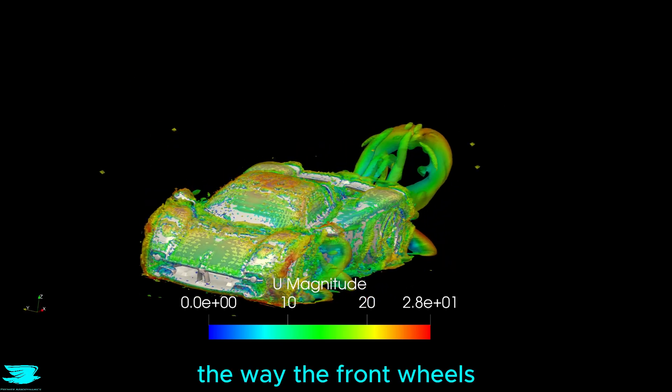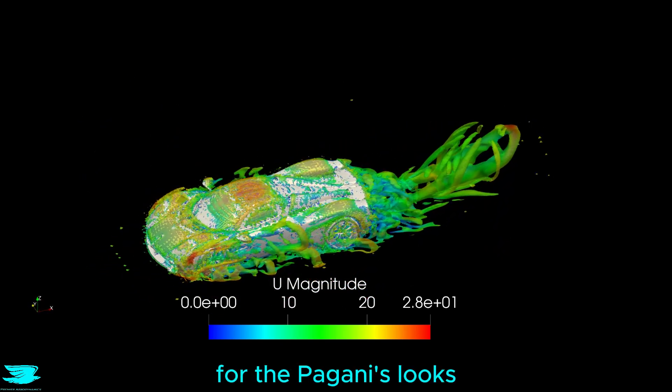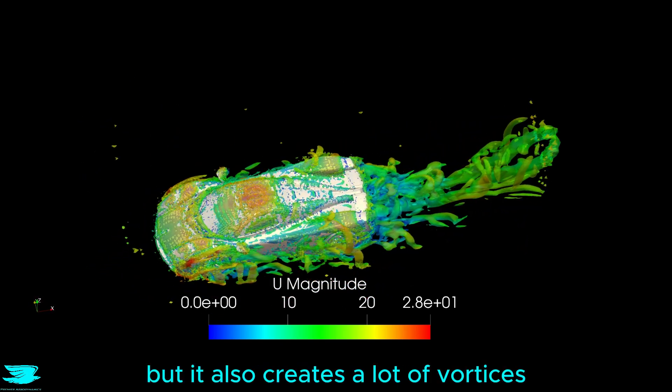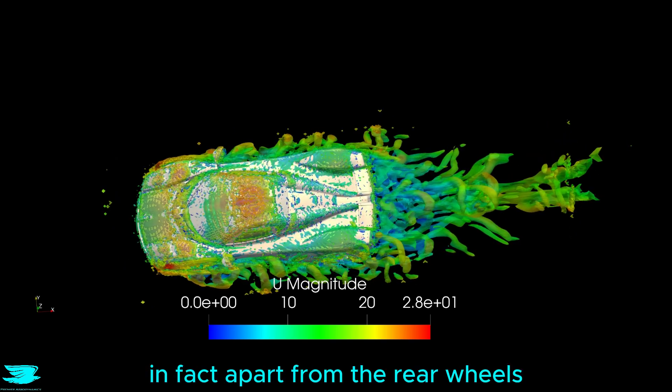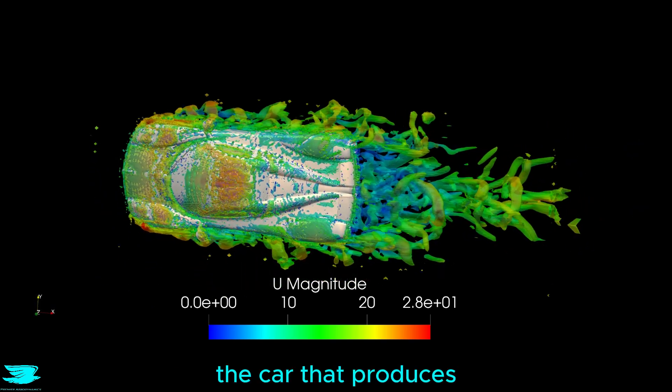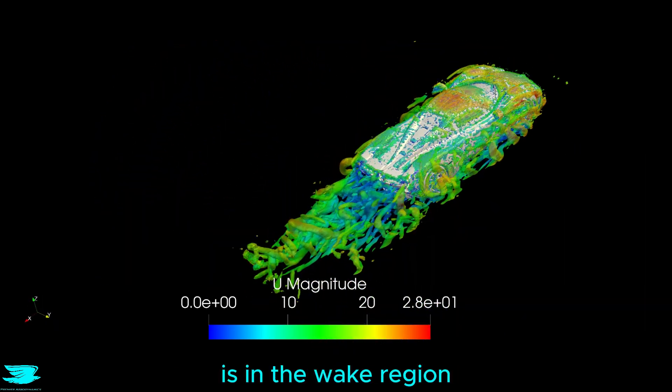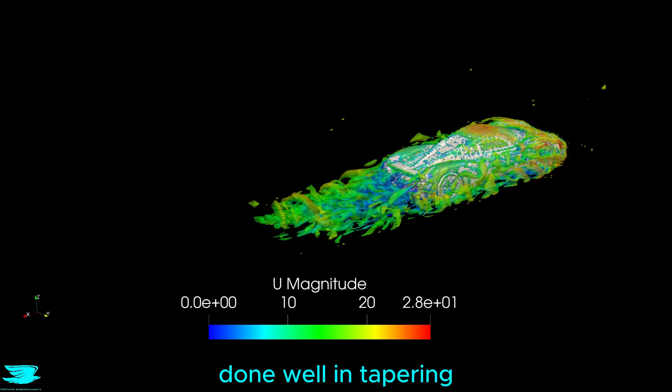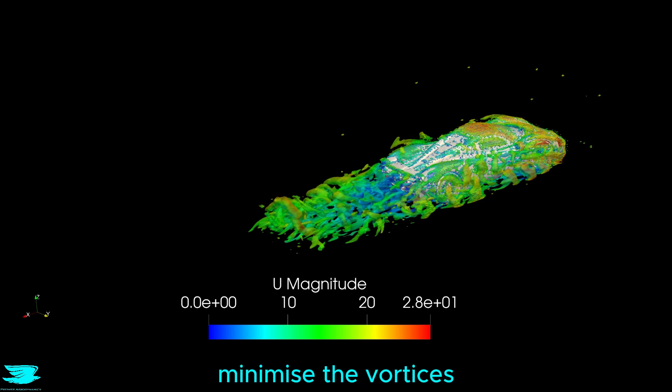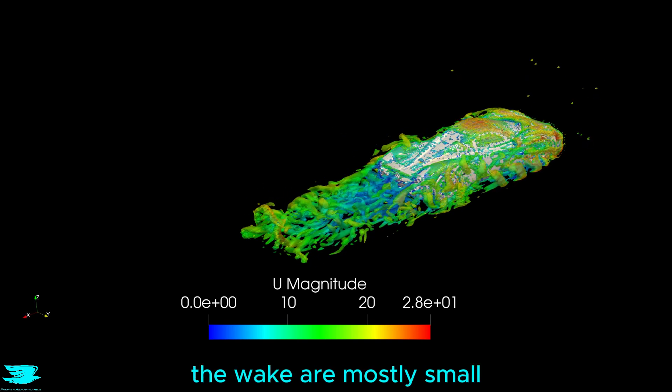Looking at the vortices, the way the front wheels have been accentuated may have done favours for the Pagani's looks, but it also creates a lot of vortices. In fact, apart from the rear wheels, the only other part of the car that produces substantial vortices is in the wake region, and the aerodynamics have actually done well in tapering the other regions to minimise the vortices, and even the vortices in the wake are mostly small.